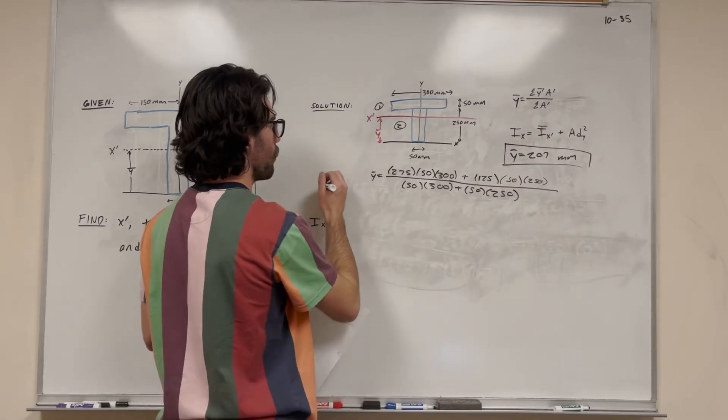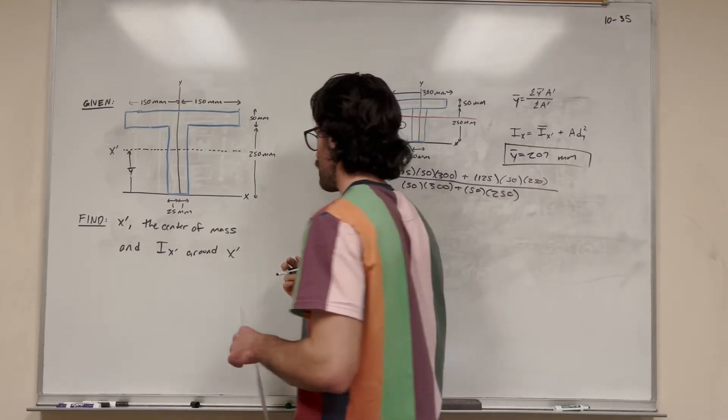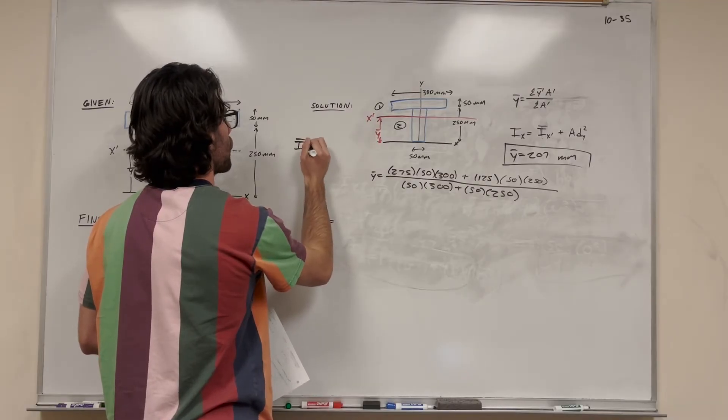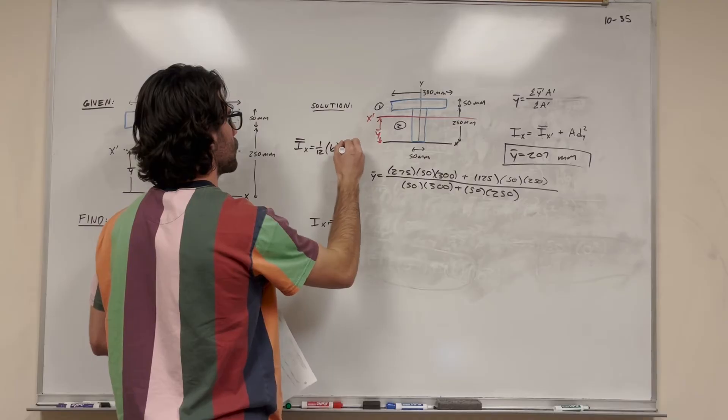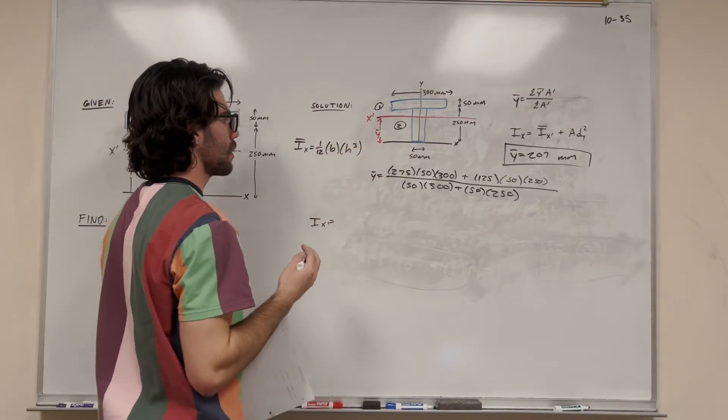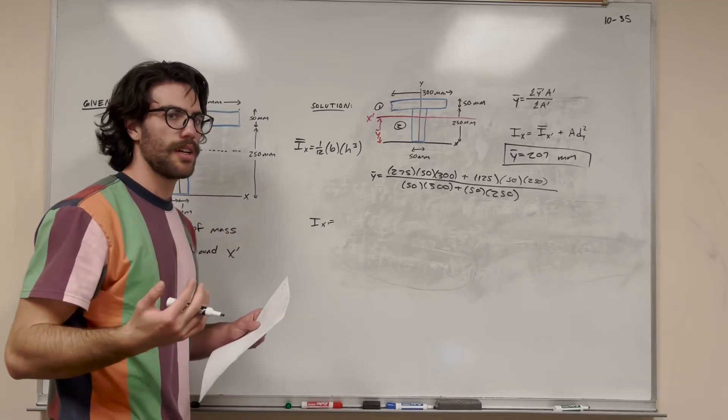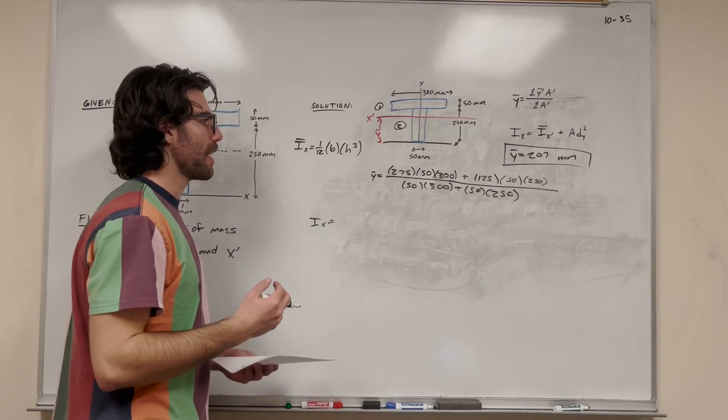So first of all, what we have first is i bar x prime. So what is i bar? Well, i bar is something you find in the back of the book. It's different for all the different kind of shapes. I'm going to write it right here. So i bar x is equal to 1/12 base height cubed. So this is what you'll find in the back of the book. If you look up what i bar is for a rectangle, you'll want to maybe not memorize these, but know where to find them. And then for the test, you might want to memorize it.